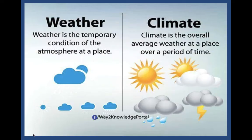A quick word on weather and climate: weather and climate are not the same. Weather is the temporary condition of the atmosphere at a place and, more specifically, at a time. Look outside — whatever you see and feel going on, that is weather. Climate, however, is the overall average weather at a place over a period of time.